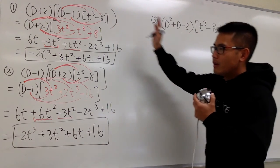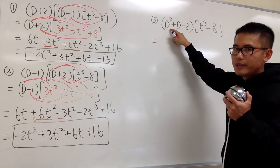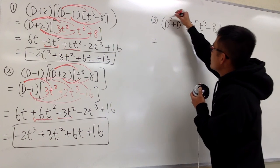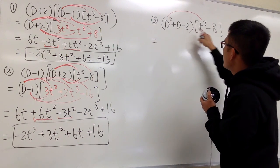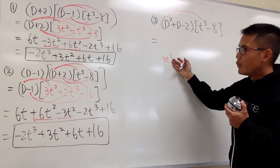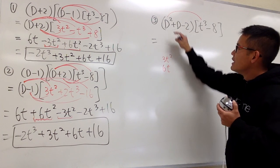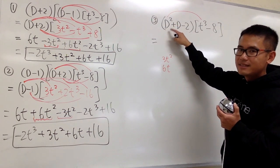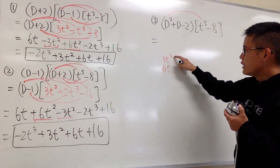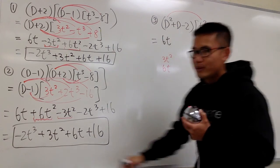D² tells us to take the derivative twice — that is, the second derivative. So D² paired with t³: the first derivative is 3t², then differentiating again gives 6t. That is the D² part applied to t³. D² of negative 8 is 0 and 0, so we don't write that.